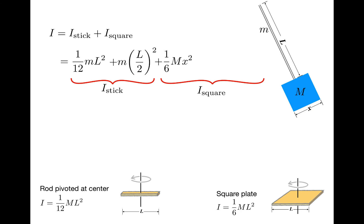But this square is rotated about an axis that's at a distance of L plus x over 2 away from the center of mass, so applying the parallel axis theorem, I'll add M times the quantity L plus x over 2 all squared.